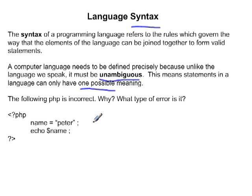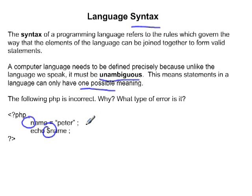To do that we have to have ways to describe that language. An example here is we have some PHP and it has an error in it. In this case the error is the variable does not contain a dollar sign at the front, so syntactically there's an error. What we have to do is describe how you as a programmer recognise that error, and that is described by the meta-languages.